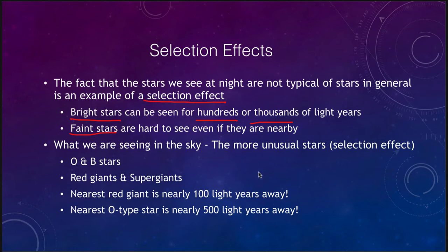What do we see in the sky again are the more unusual stars because of this selection effect. We see the O and B stars, we see red giants and super giants. But the nearest red giant is 100 light years away. The nearest O type star is 500 light years away. They're not common because we don't find any nearby, but they are visible across very large regions of space.